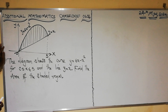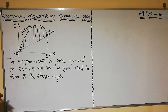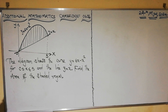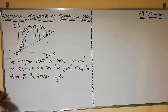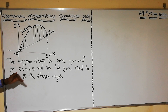The question reads: in this diagram we have the curve y = 6x − x² for 0 ≤ x ≤ 5, and the line y = x. Find the area of the shaded region.